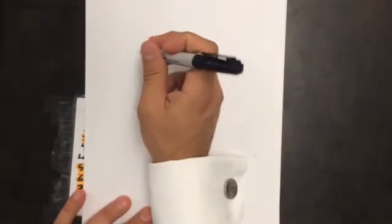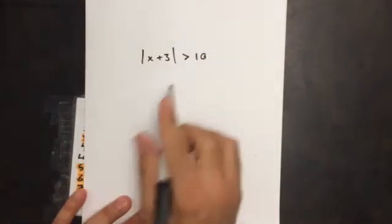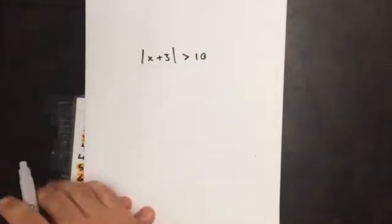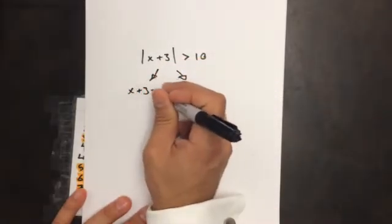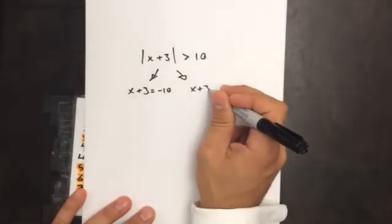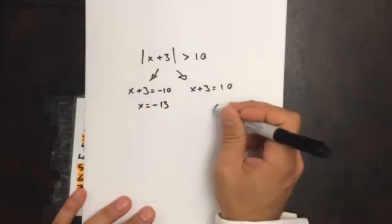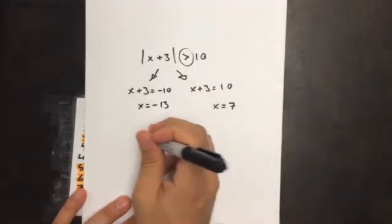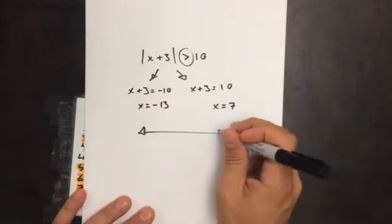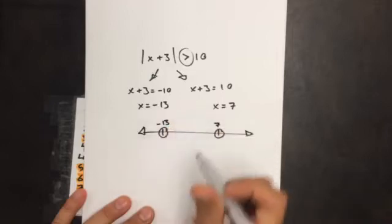That's the easy part. The slightly more difficult part is when they give me inequalities. For example, the absolute value of x plus three is greater than 10. We solve it with equals the same way — this gives negative 13 and seven. But it's not actually equal to; it's an inequality. So we think about it on a number line at seven and at negative 13, and we have to check each of the regions.